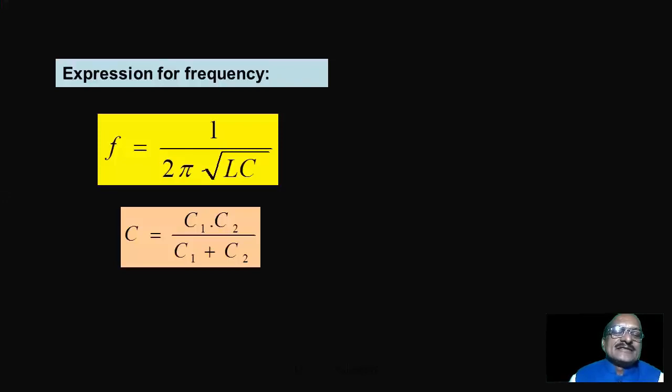C is equal to C1 times C2 upon C1 plus C2. So this formula is same as Colpitts oscillator. So very easily you can design the oscillator for required frequency.